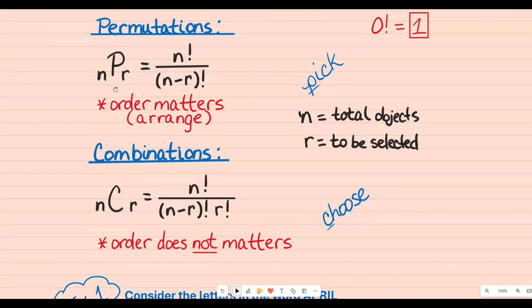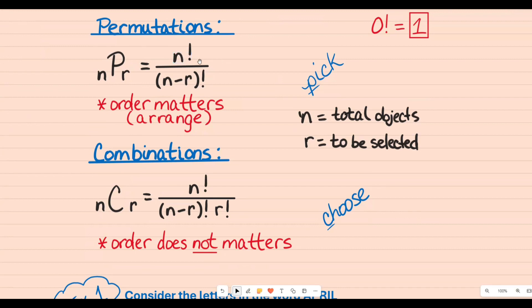In the formula you'll see an n and an r. The n represents the total that you're starting with — the total objects — and r represents what's to be selected. Factorial tells you to take the number shown for n and count in descending order until you get to one, multiplying each of those numbers together. So if n is five, you would say five times four times three times two times one.